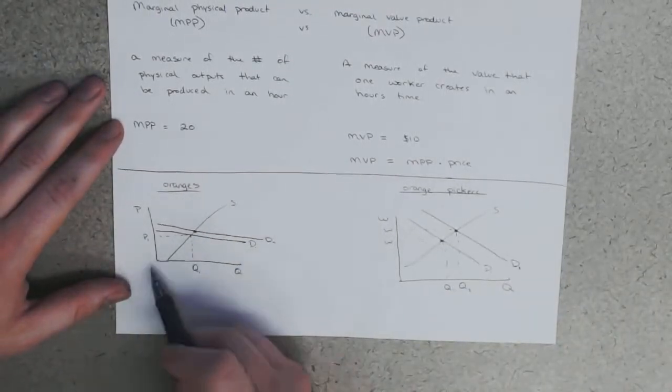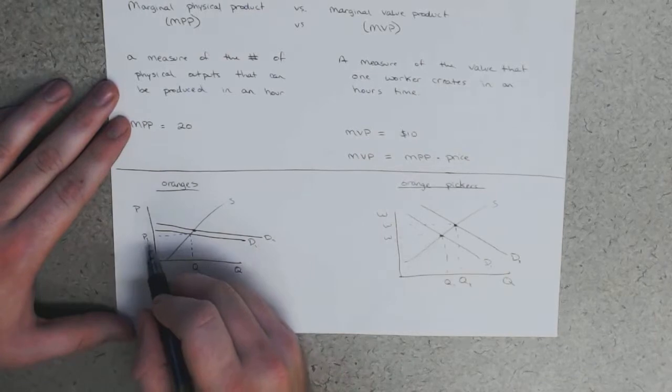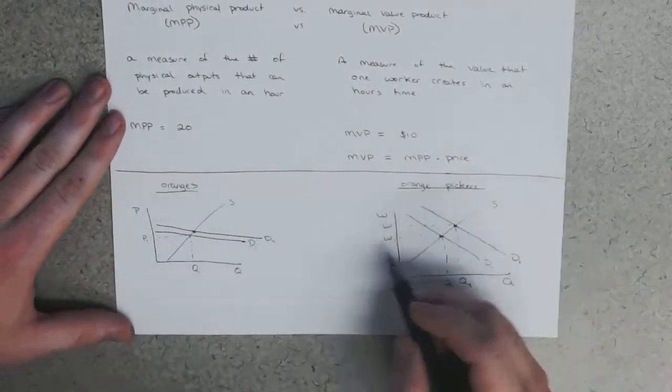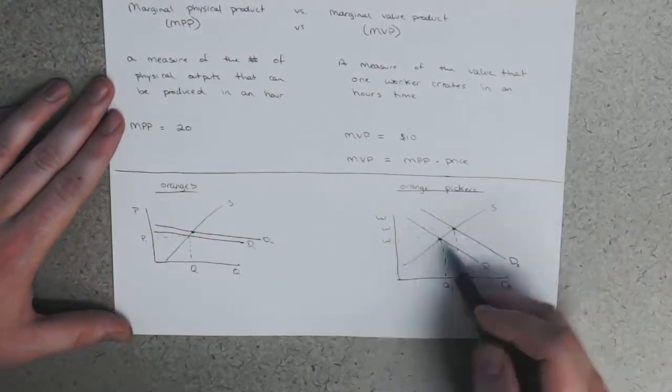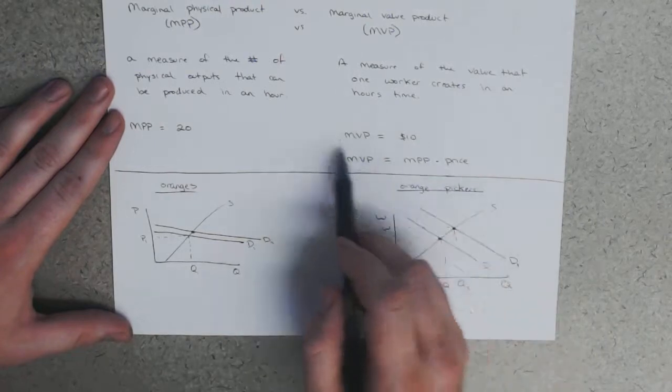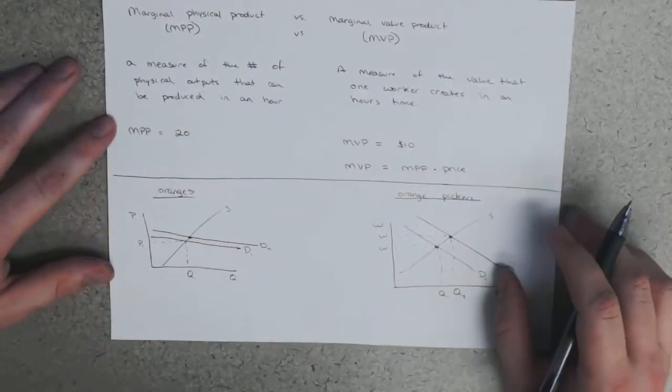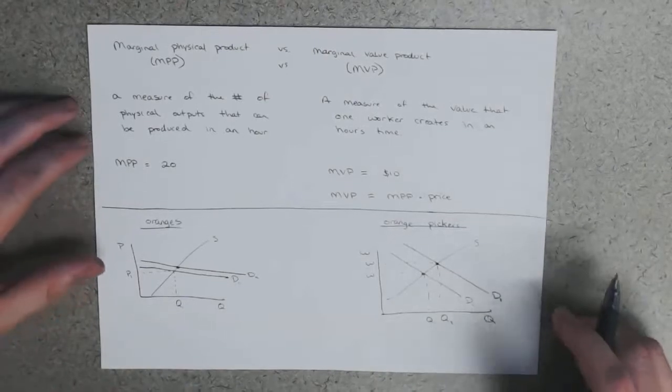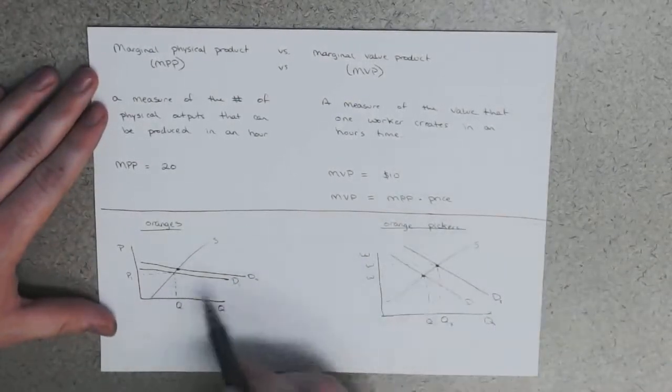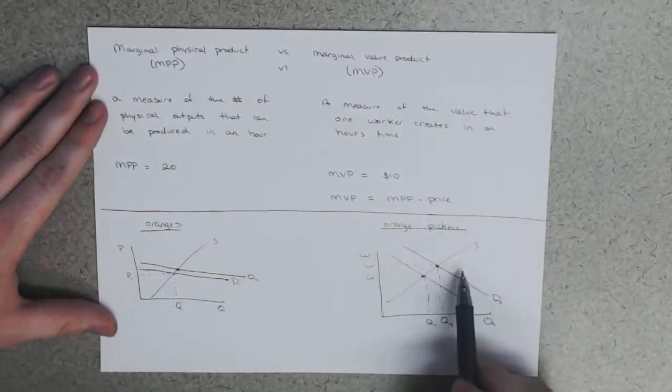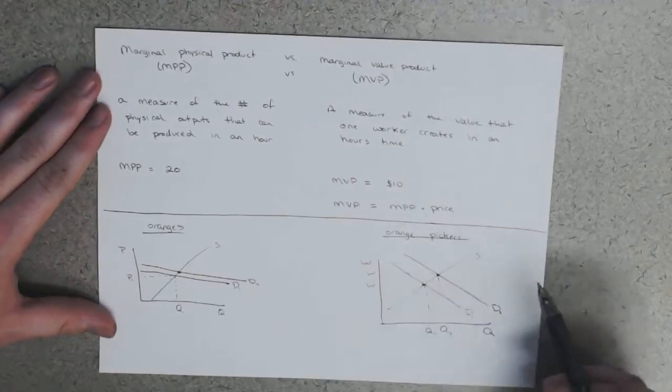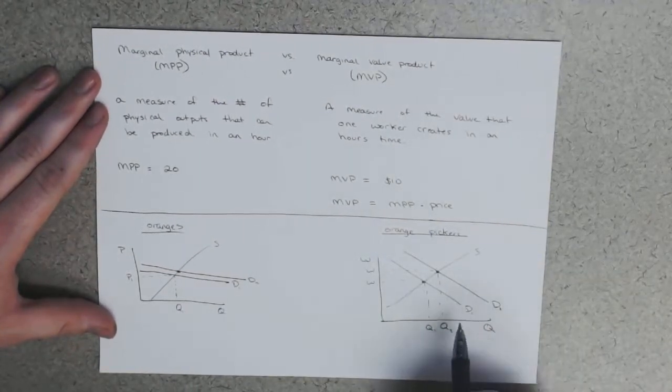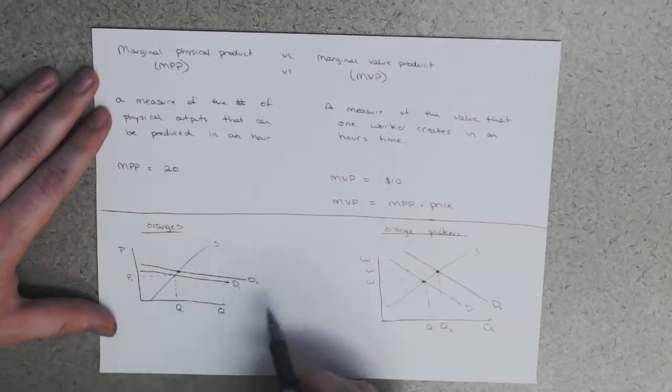Their wages go up and more of them find jobs. So demand increases. Demand decreases if demand for oranges were to decrease; the demand for workers would also decrease because the MVP would decrease. So here, fairly straightforward: increase in demand for the product causes an increase in demand for the pickers.